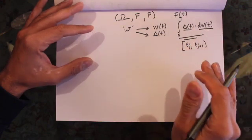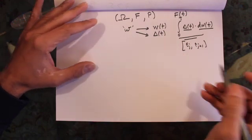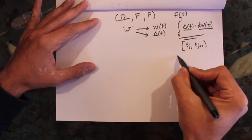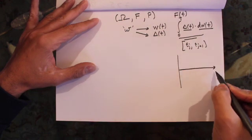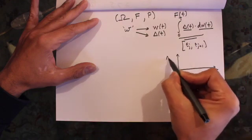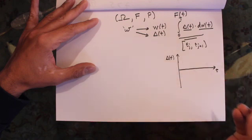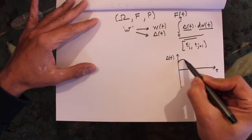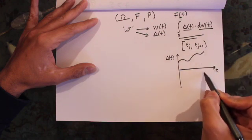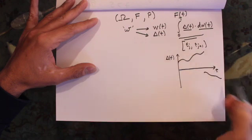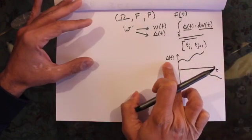It basically is going to be a continuous process and it can even have jumps. So for example, I can try to draw one process. Here, let's assume this is the time axis and this is value of delta t. Let's assume the process starts at some initial value here and then goes something like that, and then at some point basically jumps and maybe it goes down like that.